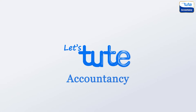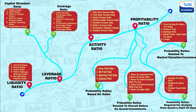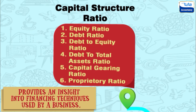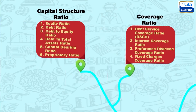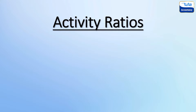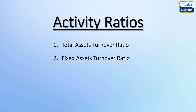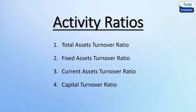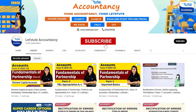Hello friends, welcome back to our channel Let's Shoot Accountancy. As we are finished with all the leverage ratios covering capital structure ratios and coverage ratios in our previous videos, we are now going to dive into a new section of ratios which is activity ratios. We shall begin with an overview of activity ratios and then move on to understanding and analyzing some of the important activity ratios: total assets turnover ratio, fixed assets and current assets turnover ratio, capital turnover ratio, and working capital turnover ratio with examples.